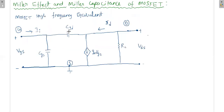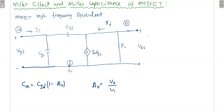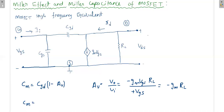From our previous knowledge, once CGD is mapped as CM, we can write CM = CGD(1 − AV), where AV is the voltage gain of the amplifier without considering CGD. The voltage gain AV = V0/VI = −GM·VGS·RL / VGS = −GM·RL. Substituting this, CM = CGD·(1 − (−GM·RL)) = CGD·(1 + GM·RL). So the Miller capacitance CM = (1 + GM·RL)·CGD.